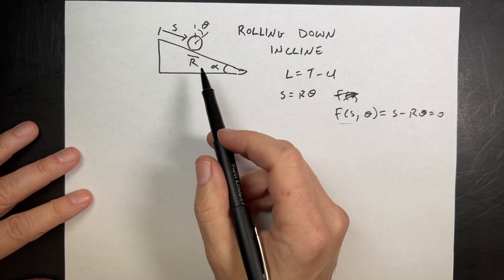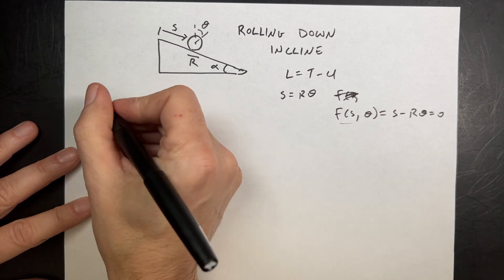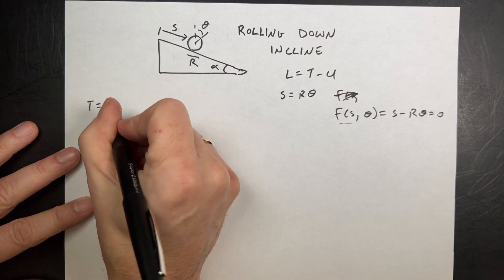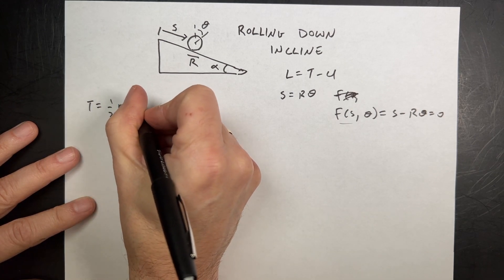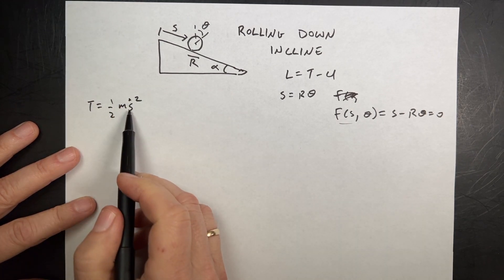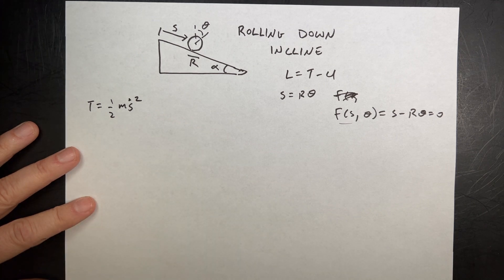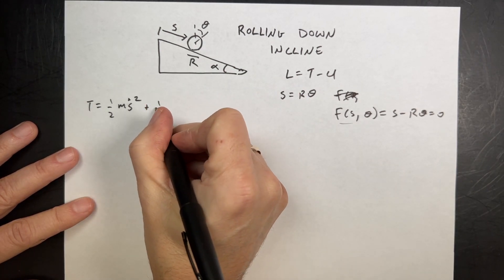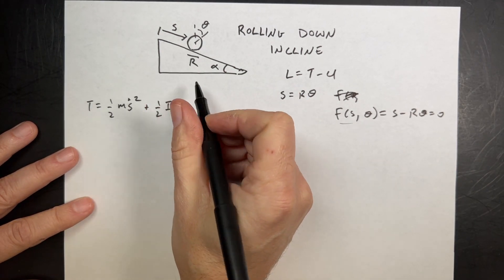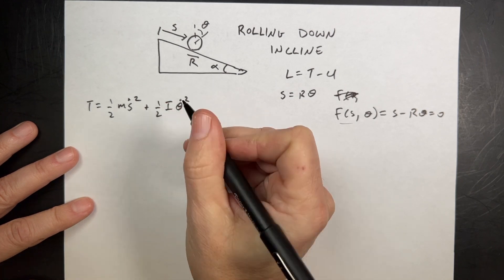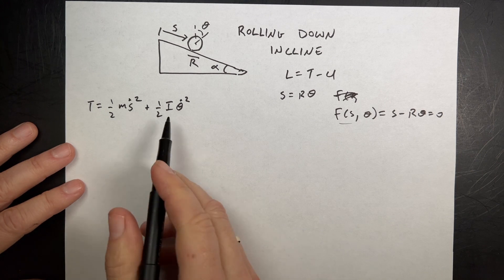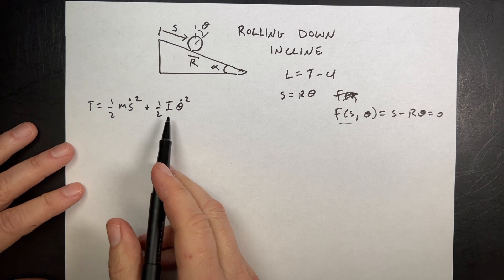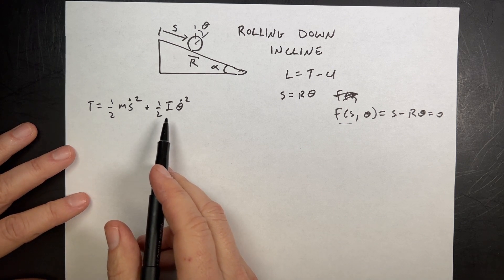Now I can write the kinetic energy and potential energy. The kinetic energy is going to be one-half M·S-dot squared — that's the translational kinetic energy where S-dot is the velocity. It also has rotational kinetic energy: one-half I·omega squared, which is theta-dot squared. I is left generic — if it were a disc it'd be one-half M·R squared; if it were a hoop, it's just M·R squared.